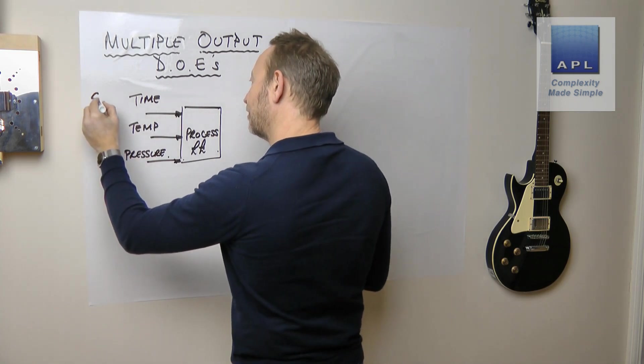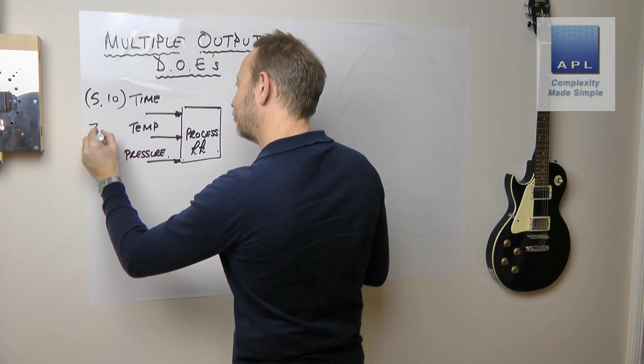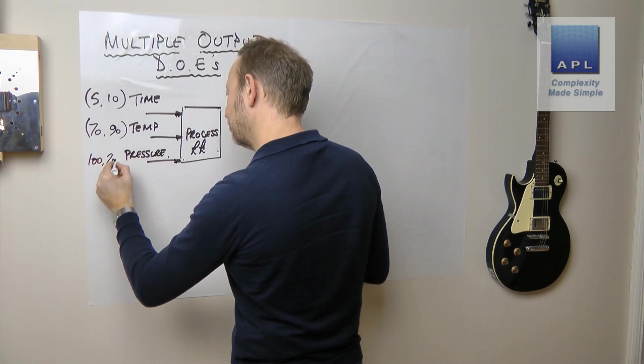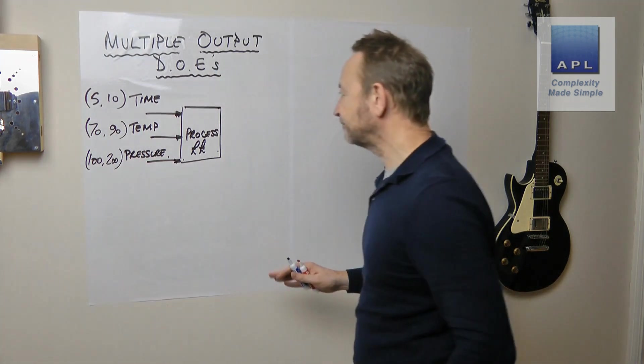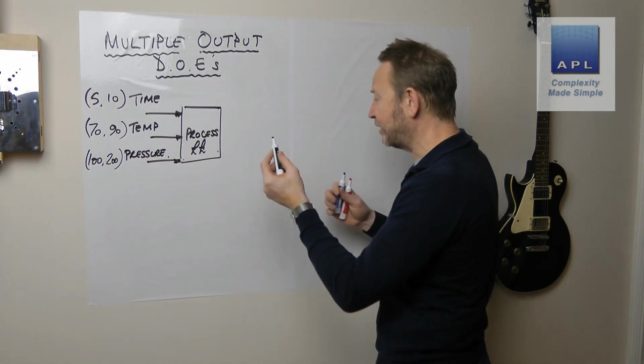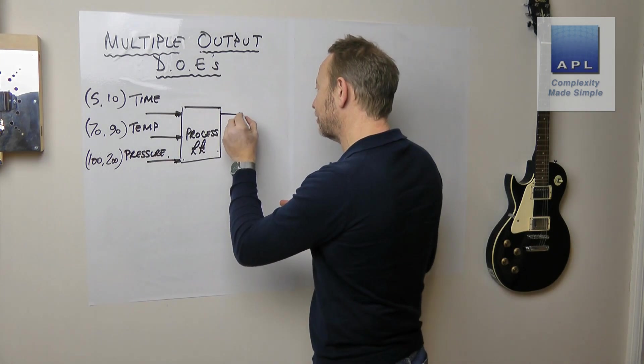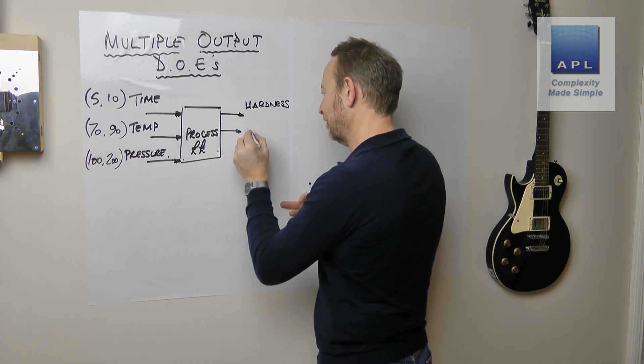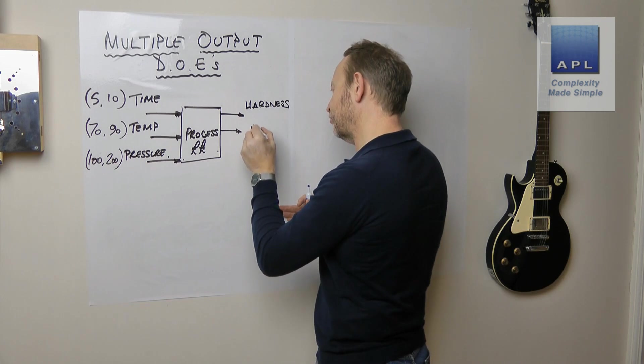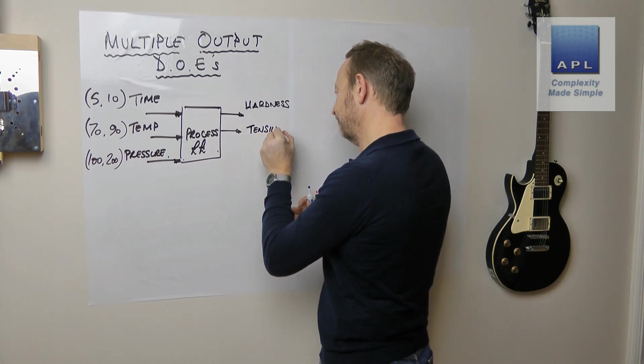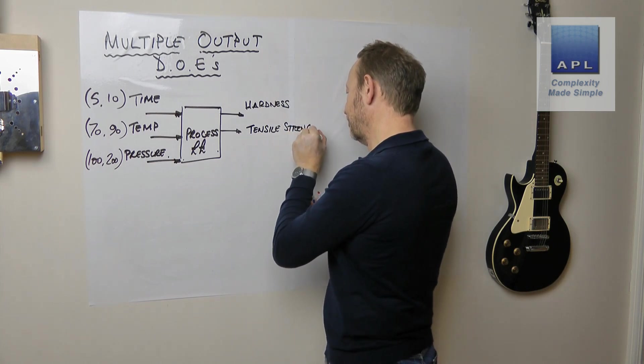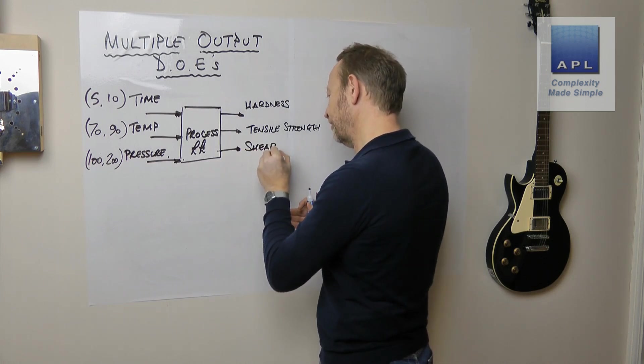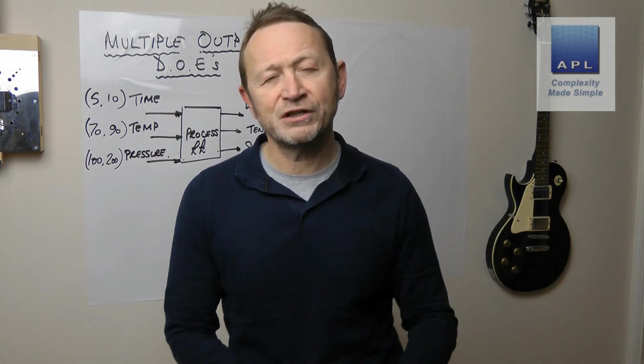We'll even put a design space on this. Time, five to ten seconds. Temperature, 70 to 90 degrees. Pressure, 100 to 200 psi. So they're the three inputs and we could be making some material and maybe we're interested in multiple responses: hardness, maybe tensile strength, and maybe shear strength perhaps. So three inputs, three outputs.